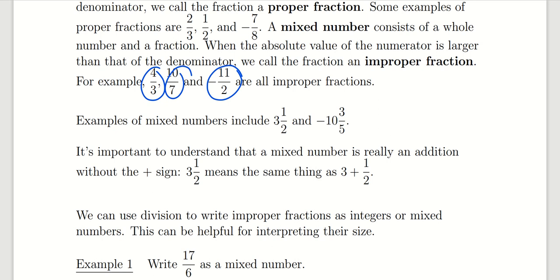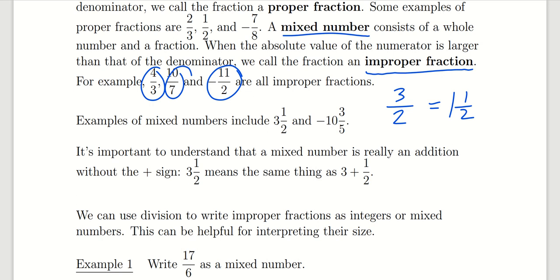Whenever a fraction is improper, there's another form that we can put it in, which is also called a mixed number. For example, if I have the improper fraction 3 halves, some of us might also recognize this as being the mixed number 1 and 1 half. They both represent the same information, and so with improper fractions, there are two different forms we can put them in: improper form or mixed number form.